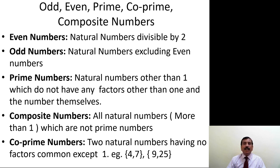For example, 8 is divisible by 2 and by 4, so 8 cannot be prime. Consider 3: it is divisible only by 3 and 1, so it is a prime number. The initial prime numbers are 2, 3, 5, 7, 11, 13, 17, and so on.